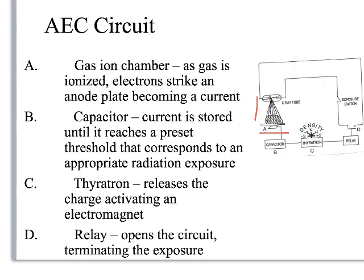Interestingly, the human body is also a capacitor — that's why tasers work on people. The electrons are stored in the capacitor until they reach some threshold, almost like filling up a glass with water. Once the capacitor is full, the current flows out and it can't store anymore. That's what shuts off the relay — it opens the circuit, terminating the exposure. There's a little electromagnetic relay: the minute the capacitor is full, the current overflows, opens the relay, breaks the circuit, and exposure stops.